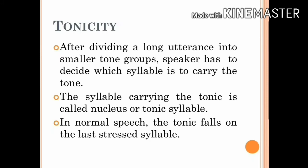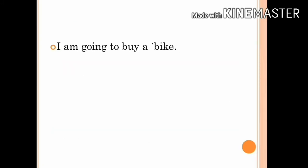Now let's consider tonicity. After dividing a long utterance into smaller tone groups, a speaker has to decide which syllable is to carry the tonic or tone. The syllable carrying the tonic is called the nucleus or the tonic syllable. In normal speech—that is, if the speaker does not consider any of the words in the utterance as particularly important—then the tonic falls on the last stressed syllable. Thus, in the sentence 'I am going to buy a bike,' the last stressed syllable is 'bike,' and this syllable carries the tonic.